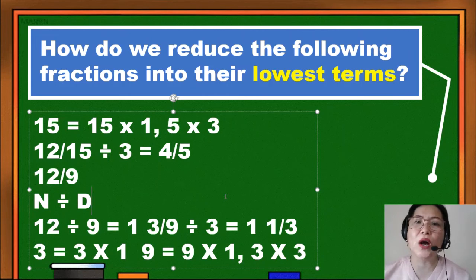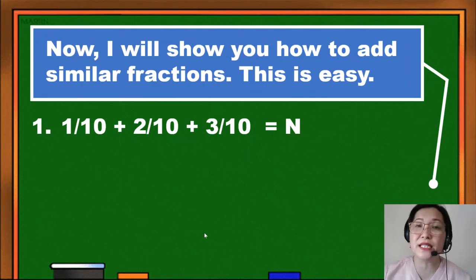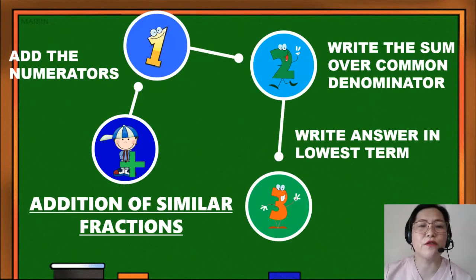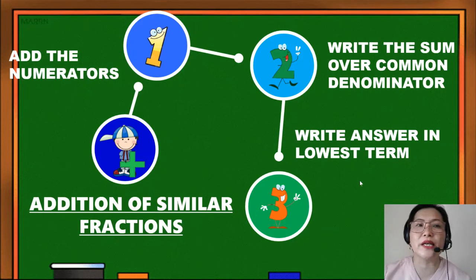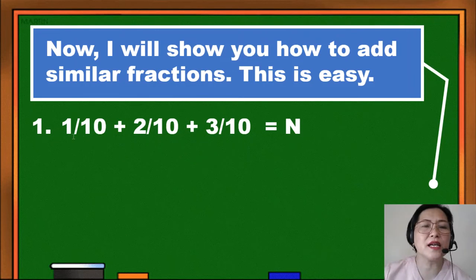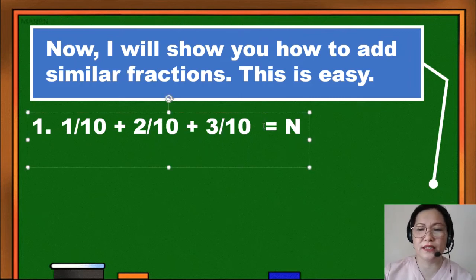Now that you know how to reduce fractions to lowest terms, we can now add similar fractions, and this is very easy. We will just follow the steps: add the numerators, write the sum over the common denominator, and write the answer in lowest term. So let us apply the rules. It says here 1/10 plus 2/10 plus 3/10, and we are going to get the answer.